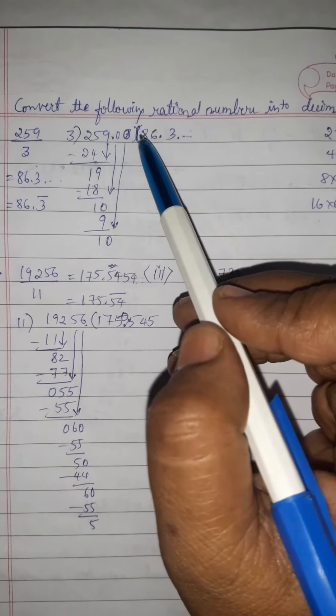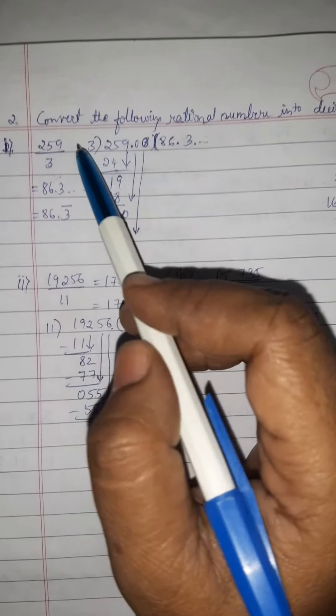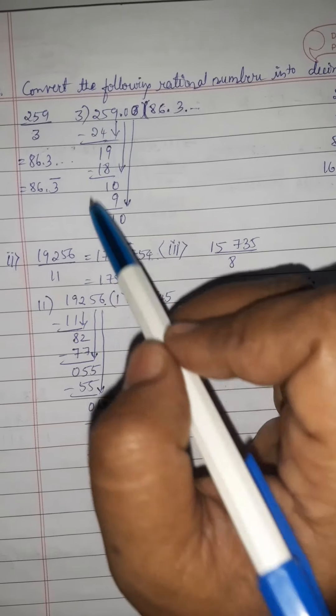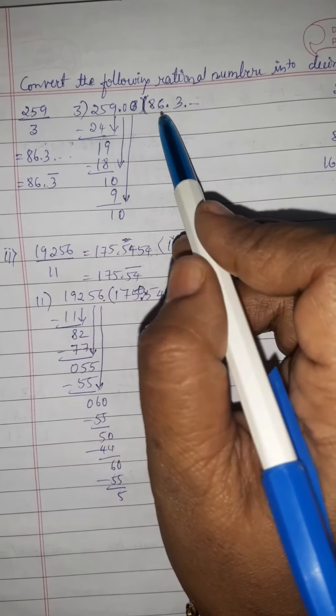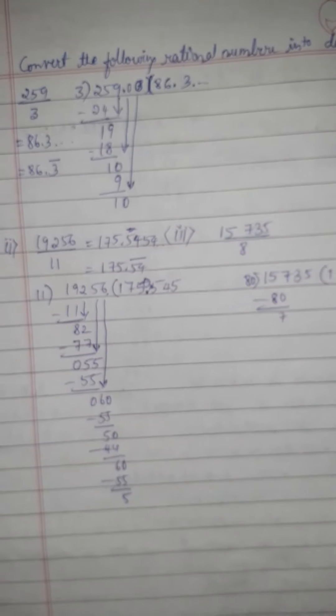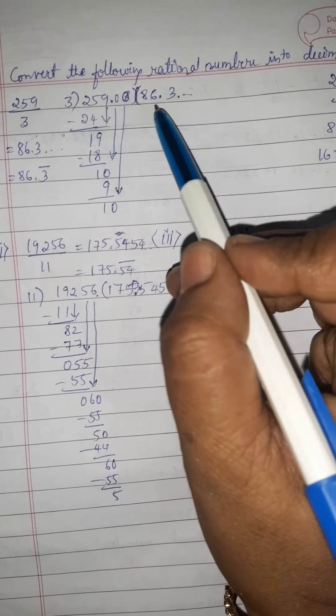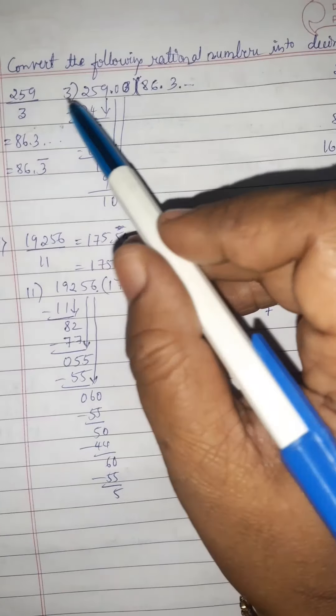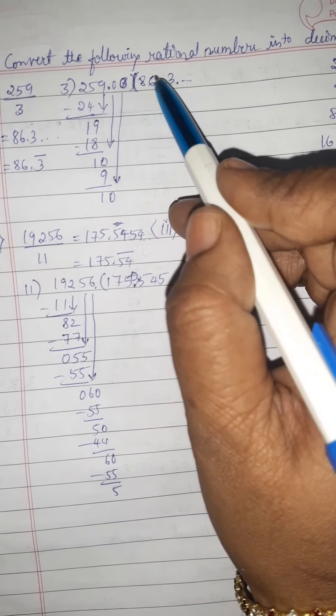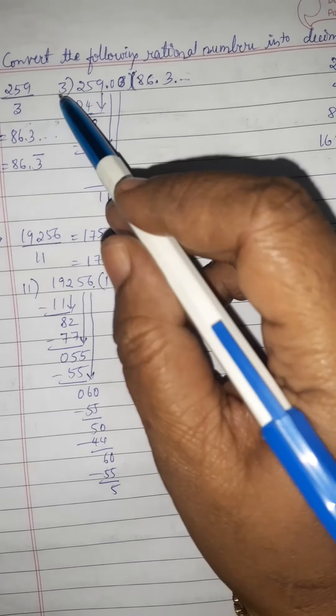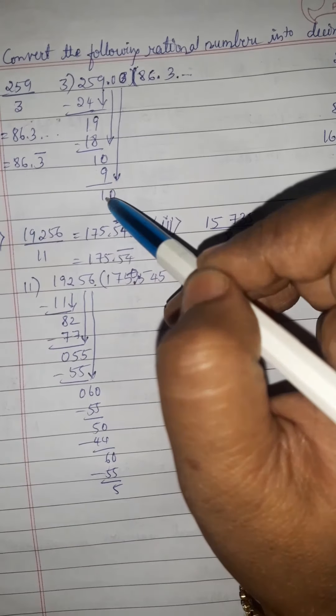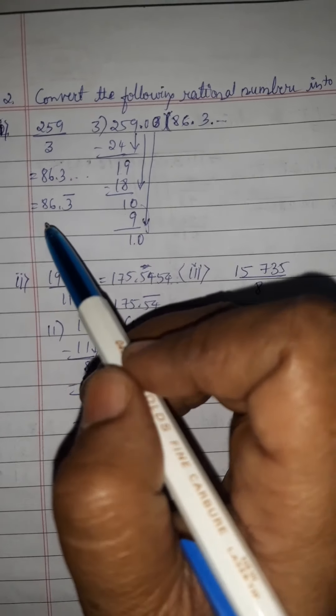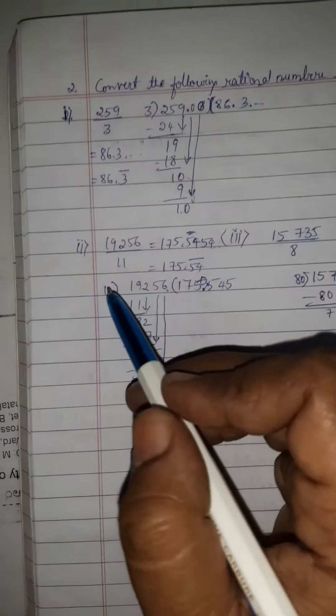Next we have question number 2. Convert the following rational numbers into decimals. Here we are given rational numbers. We have to convert them into decimal number by long division method. 3 is the divisor. 3 times 8 is 24. 25 minus 24 is 1. Take the next number 9. 3 times 6 is 18. 19 minus 18 is 1. 1 is less than 3. Therefore we take the decimal point. 3 times 3 is 9. 3 is recurring. Therefore, the answer is 86.3 bar.